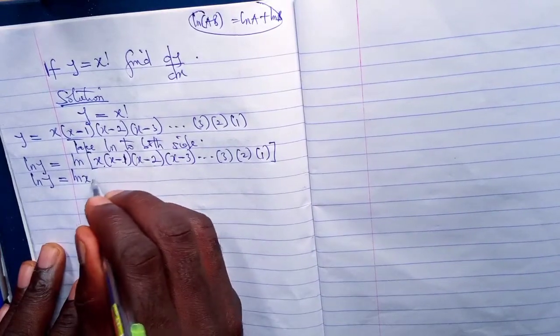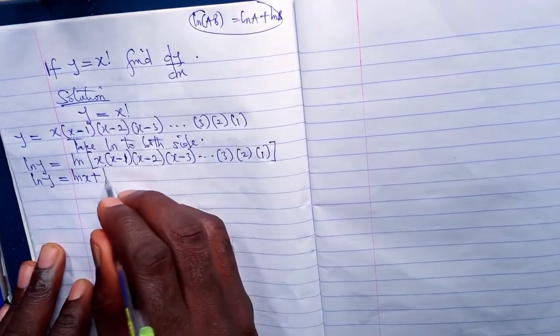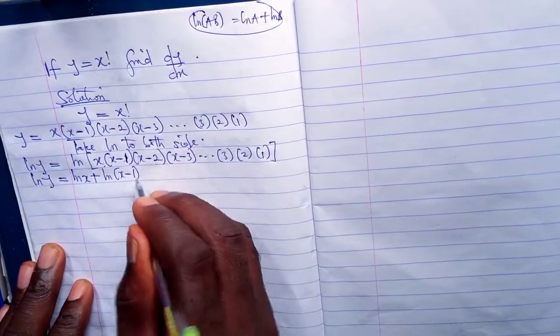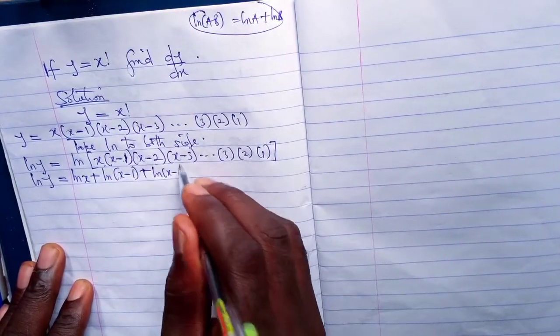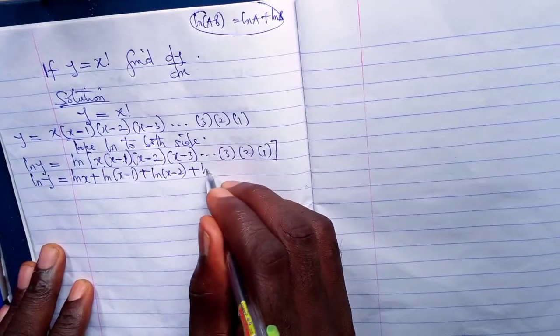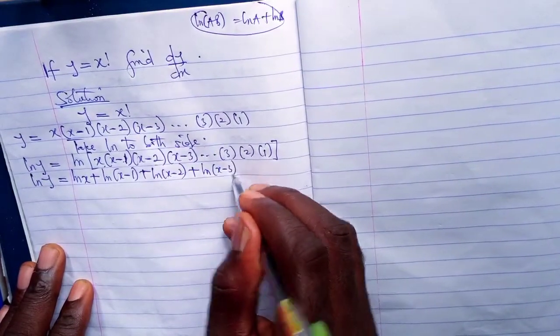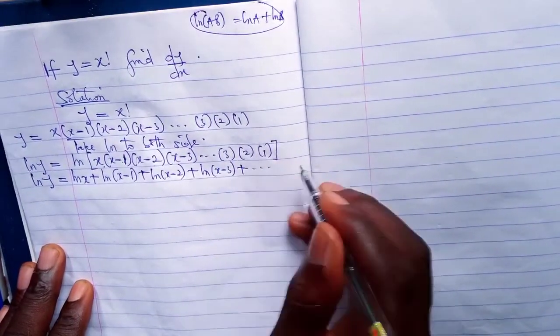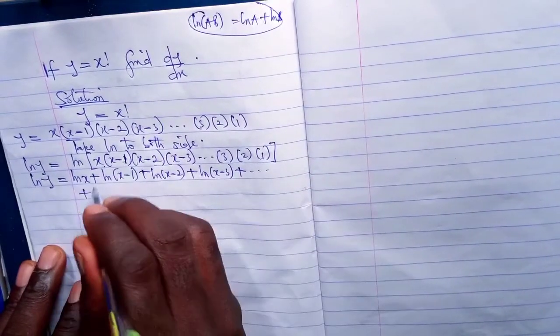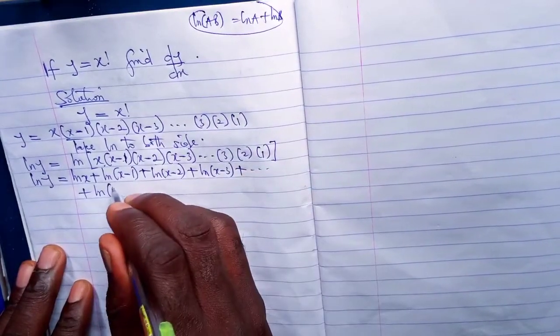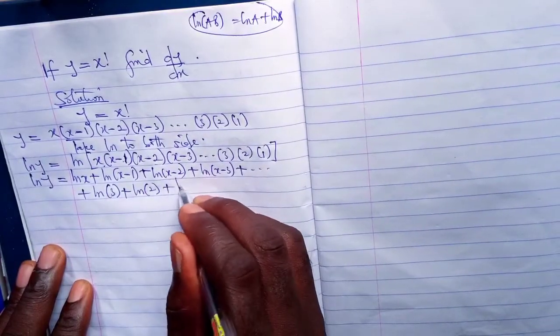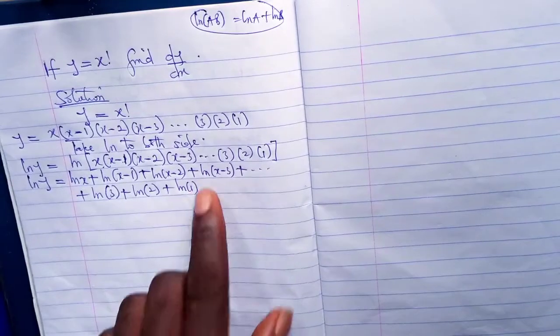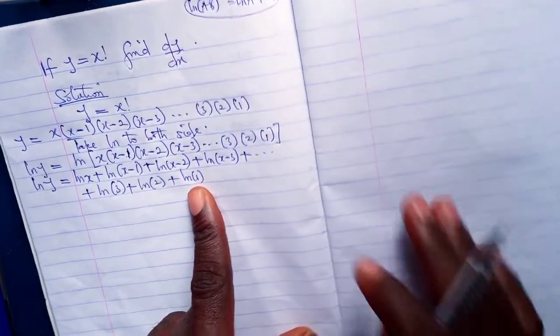Here will be ln x plus ln of x minus 1 plus ln of x minus 2 plus ln of x minus 3 plus dot dot dot plus ln 3 plus ln 2 plus ln 1.